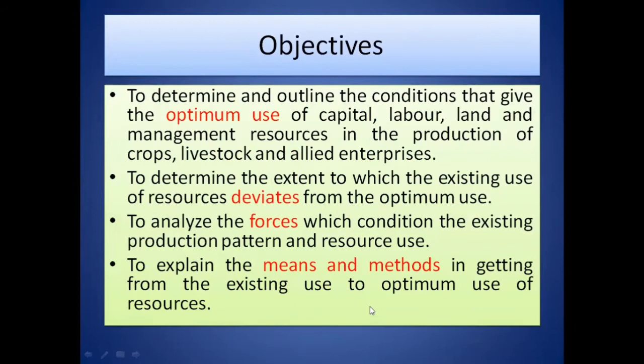The first objective of agricultural production economics is to determine and outline the conditions that give the optimum use of capital, labor, land, and management resources. There are four factors of production: land, labor, capital, and entrepreneur. The first objective is how to use these four factors of production in an optimum way — meaning maximum profit and minimum loss.